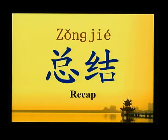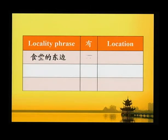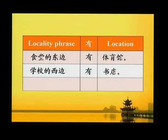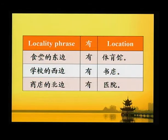总结 Recap: 食堂的东边有体育馆。学校的西边有书店。商店的北边有医院。今天我们学了语言点 Locality Phrase plus 有 plus Location. 希望你喜欢这堂课。Hope you have enjoyed this lesson. 再见！